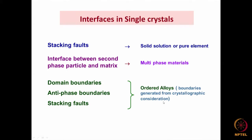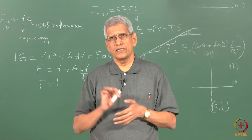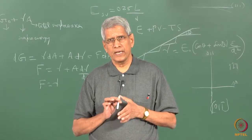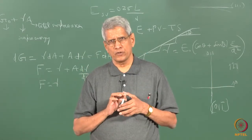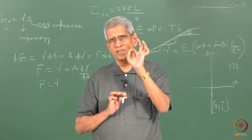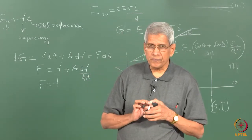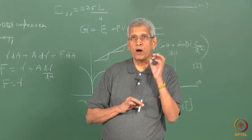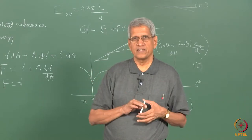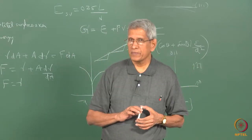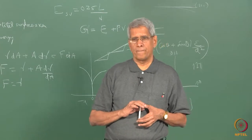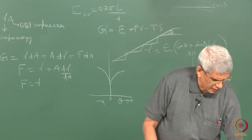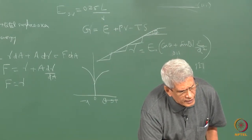So far we have discussed the types of surfaces with respect to energy and determined the equilibrium shape using the broken bond model. This is the equilibrium shape a void or crystal will take when grown from a melt or deposited from vapor.